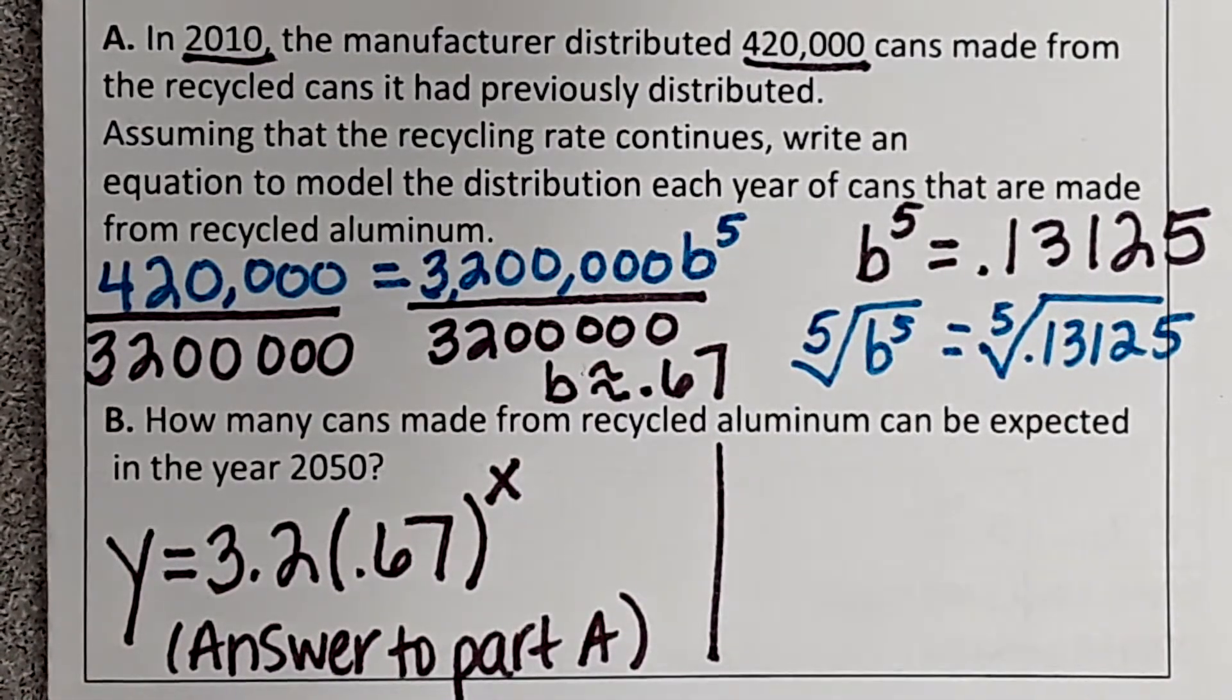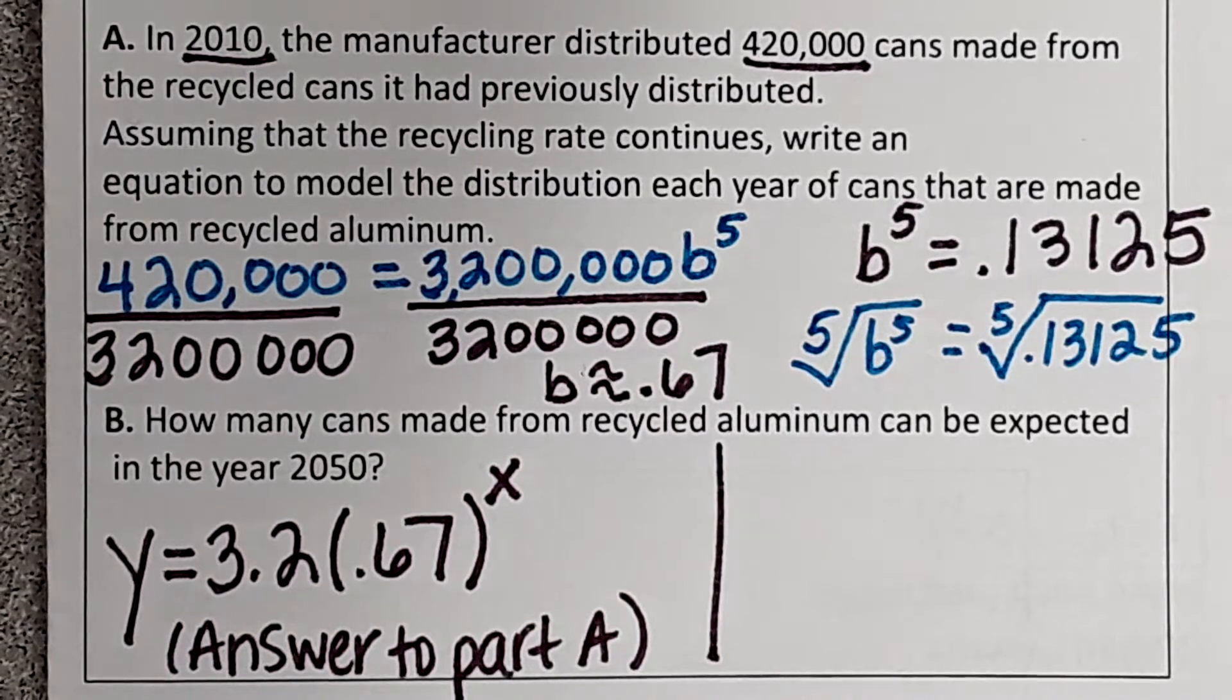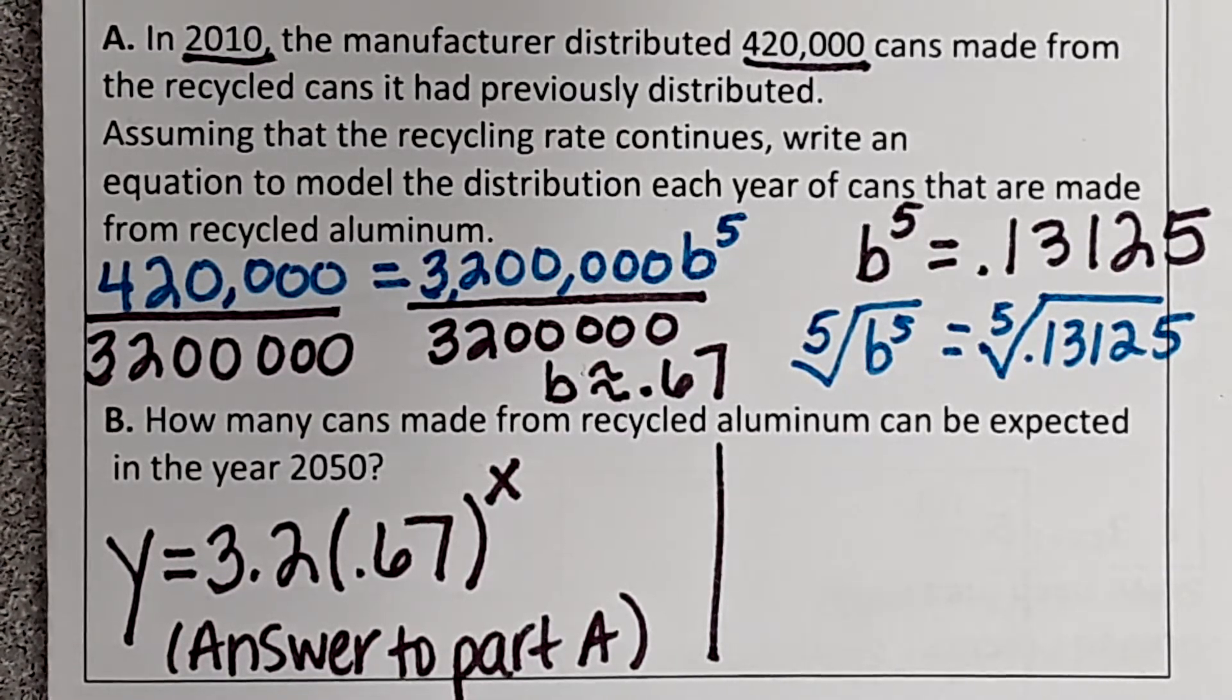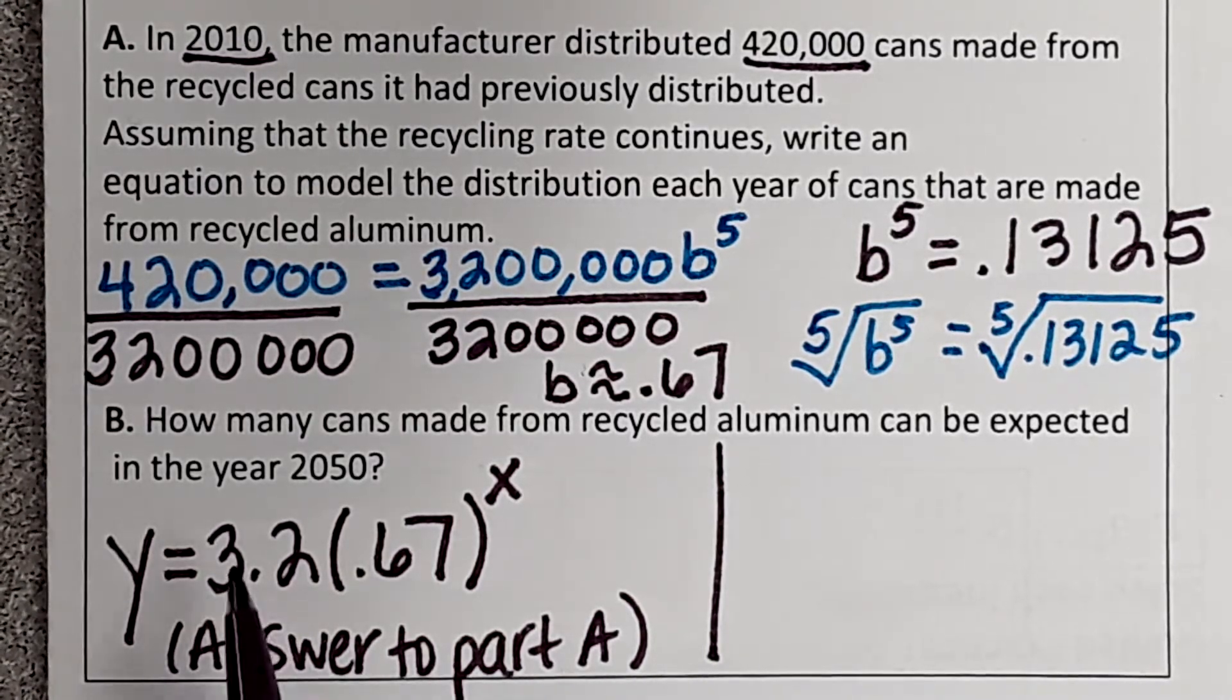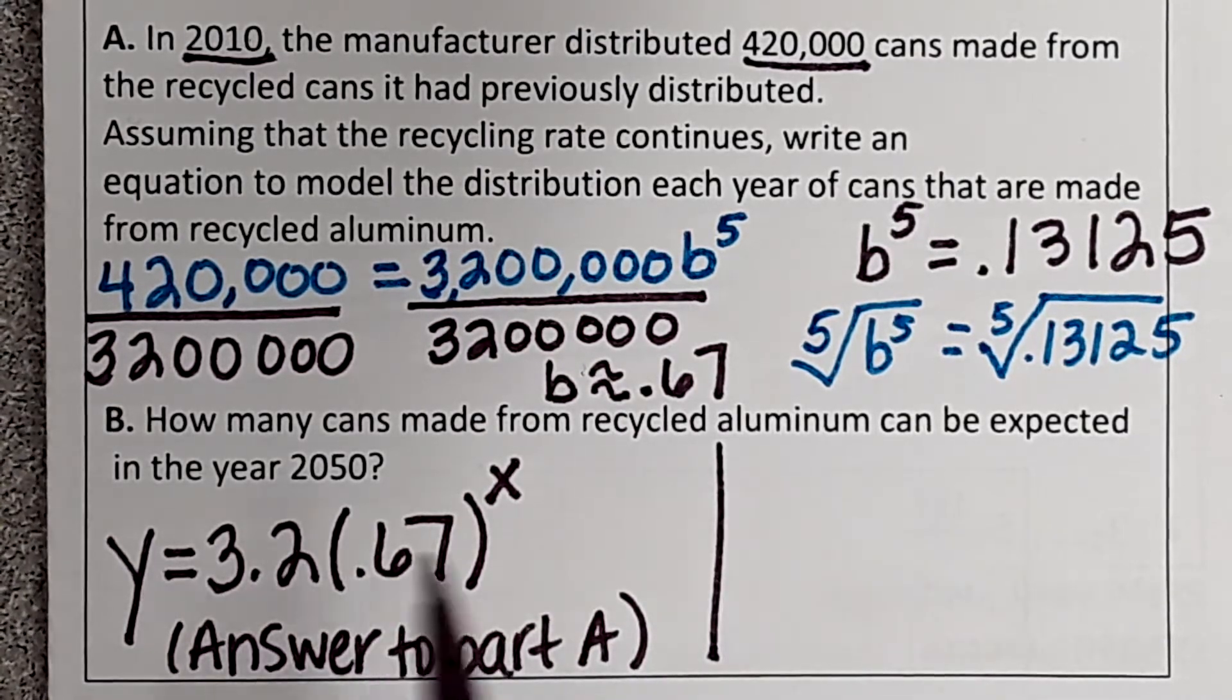When they do this to you, they're going to give you an initial value, two years, and another value. You have to find B and then you have to make the equation. So now we're going to go to part B. Part B is the actual question: How many cans made from recycled aluminum can be expected in the year 2050?